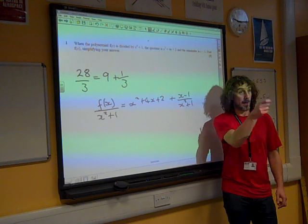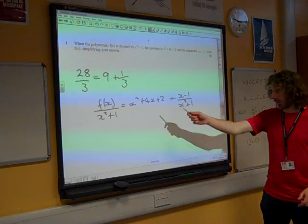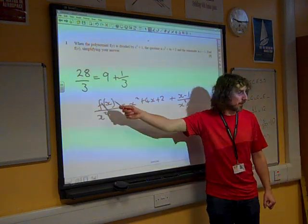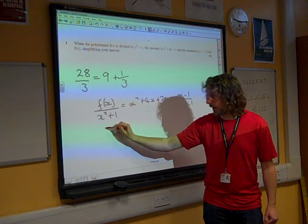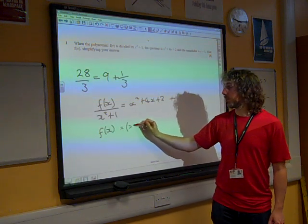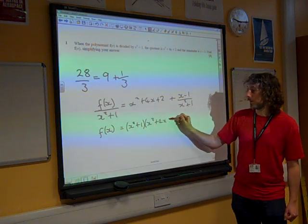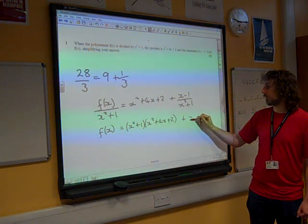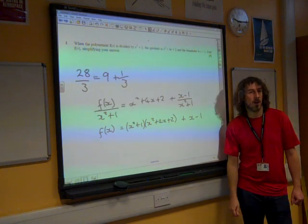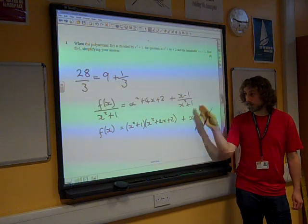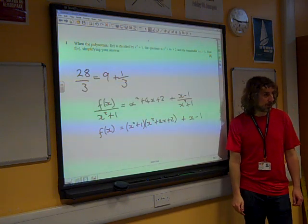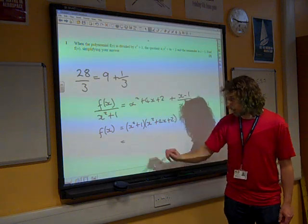Multiply by x² + 1? That's fine, exactly. We want to get f(x) on its own. So if we multiply by x² + 1, it would look like that. I'm just going to multiply every term by it. And now we just need to multiply this out and tidy it up.